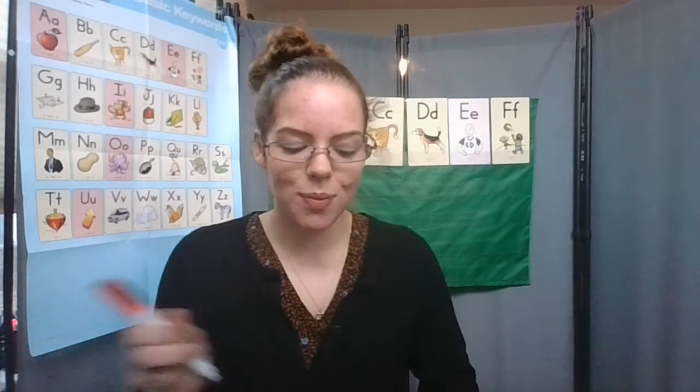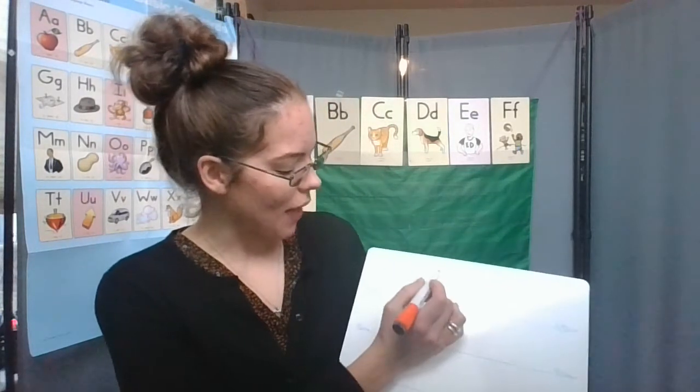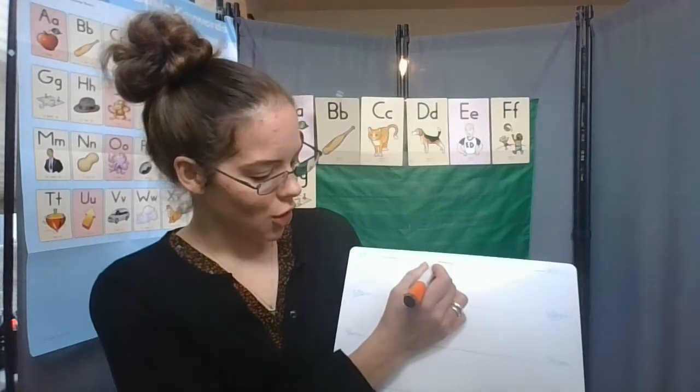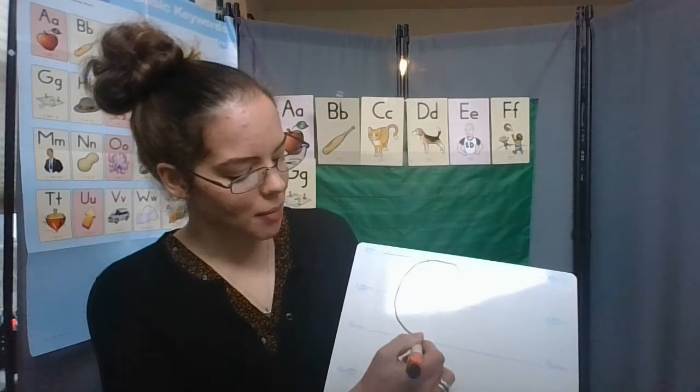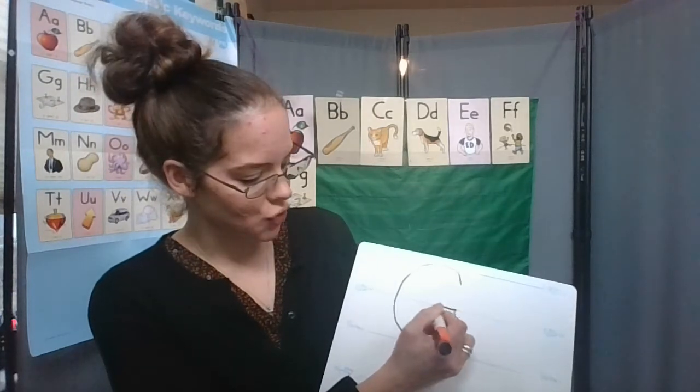To make the letter G, you can try to trace this in the air while I trace on the board. We start at the top, curve around to the bottom, curve up to the middle, and then a straight line across.